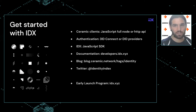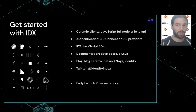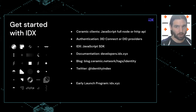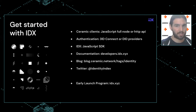You can get started with this today. Ceramic has a JavaScript full node that can run in browser or client-side, or an HTTP API. For authentication, you can authenticate your DID with all kinds of blockchain wallets your users already have using 3ID Connect, or you can natively integrate a DID provider for more complex use cases. IDX is a JavaScript SDK — you can drop it right into your app client-side and it works. Check out the docs at developers.idx.xyz, and the Ceramic Network blog has lots of good content and tutorials.